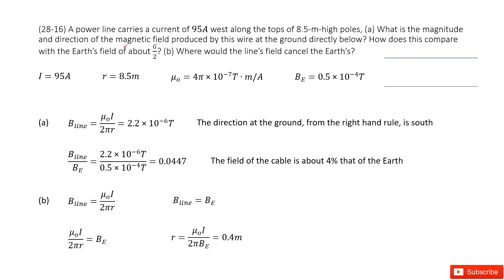You can see we have a power line. It is a wire, horizontal wire along tops of a pole, right this way. And then we can see the wire, the current goes this way.